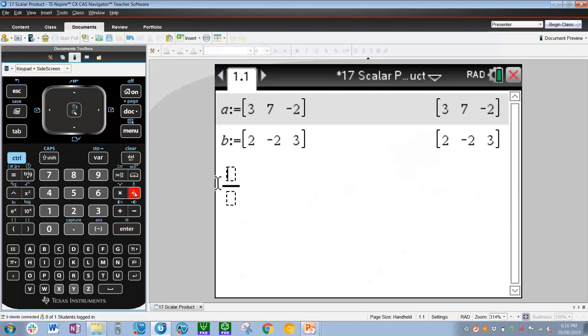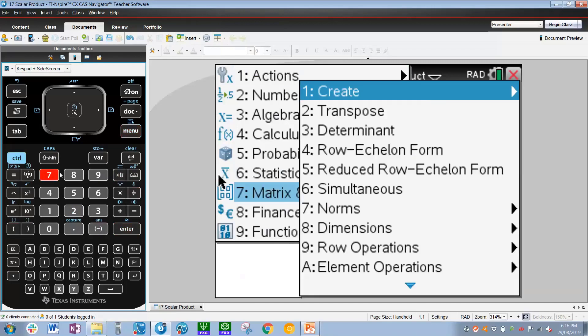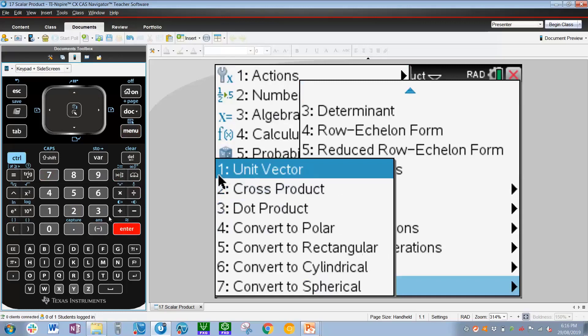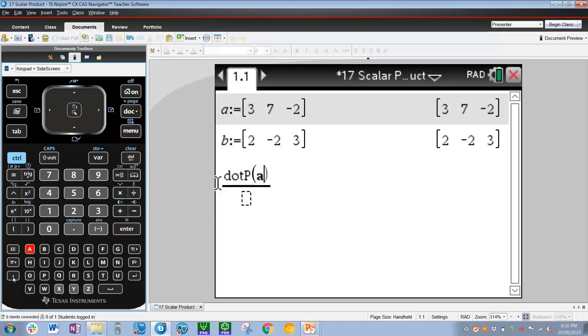To get the dot product of two vectors, we'll have to go to menu 7 for matrix and vectors, press up or c for vectors, press enter, and then the dot product is number 3. So dot product of a, b, that's the numerator.